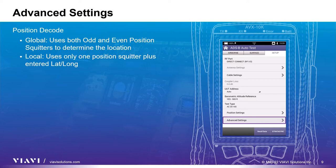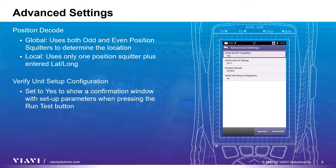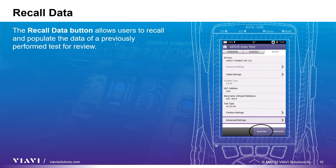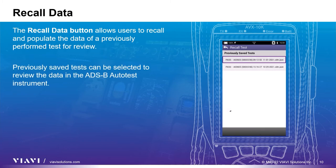The local option uses only one position squitter plus the latitude and longitude entered to help determine the aircraft's reported position. Setting verify unit setup configuration to yes tells the AVX-10K to display a pop-up window after hitting the run test button, and prior to running the test, to verify setup parameters. The recall data button allows users to recall and populate the data of a previously performed test for review. Previously saved tests can be selected to review the data in the ADS-B auto instrument.